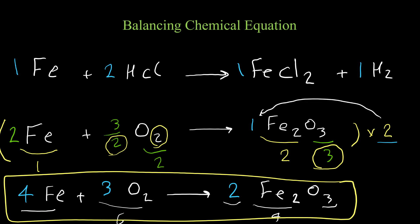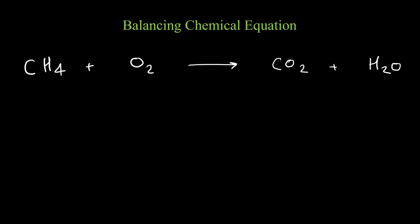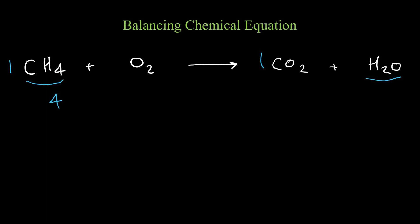Let's balance the combustion reaction of methane: the reaction of methane and oxygen producing carbon dioxide and water. Starting with carbon — methane has one carbon and carbon dioxide has one carbon, so they are balanced. For hydrogen, methane has four hydrogen and water has two, so we put two in front of water. Two times two gives four hydrogen on both sides, so carbon and hydrogen are now balanced.